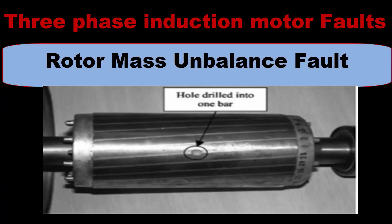Rotor mass unbalance fault: the rotor of an induction motor is placed inside the stator and rotates coaxially with it. In heavy motors, it is centrally aligned with the stator, and its axis of rotation is the same as the geometrical axis of the stator, so the air gap between the inner of the stator and the outer of the rotor is uniform. If this air gap is not the same, then eccentricity occurs, and this rotor fault is called rotor unbalanced fault.